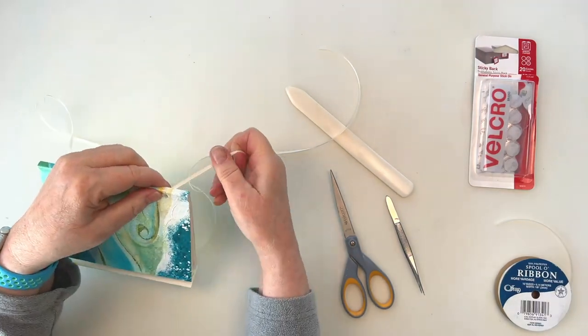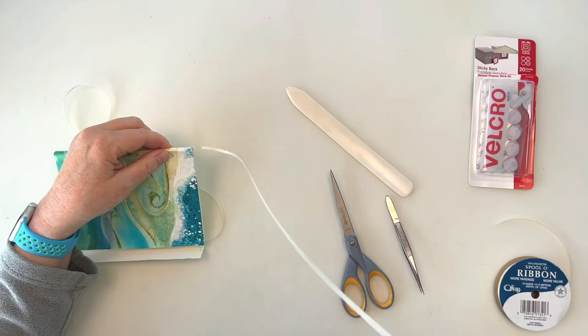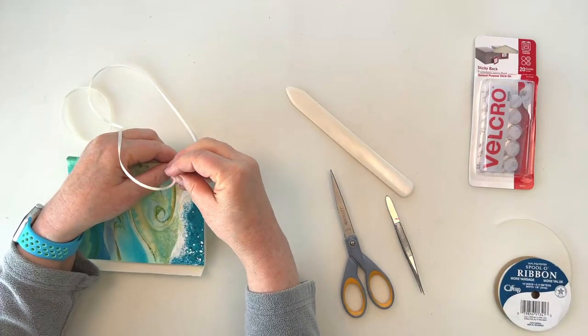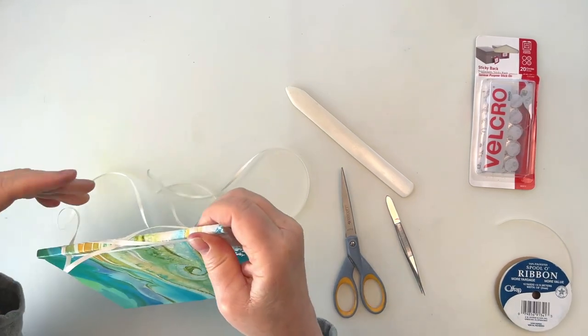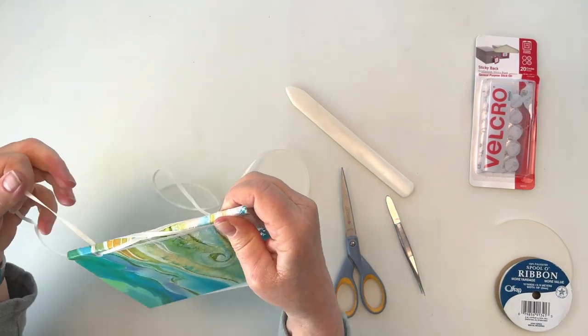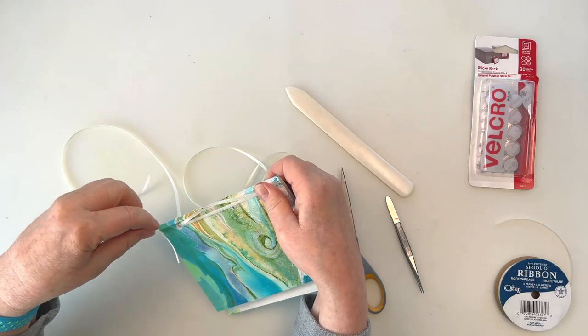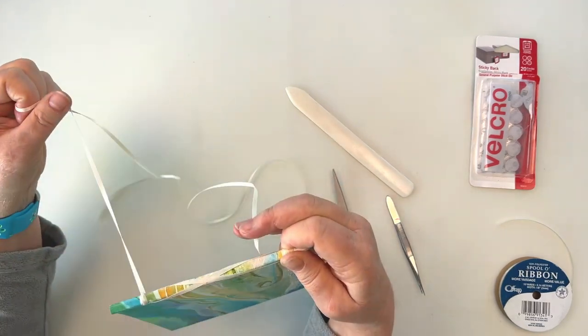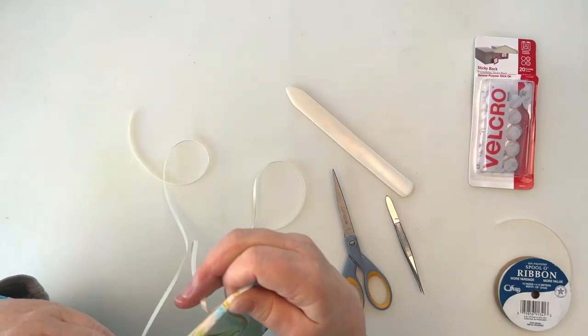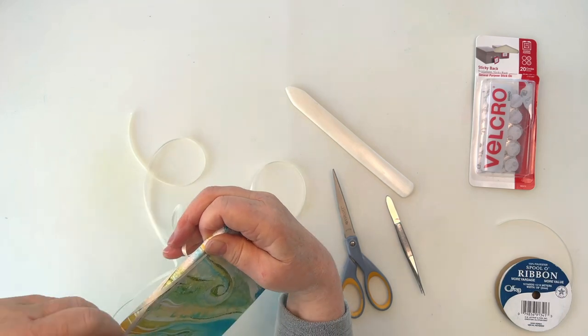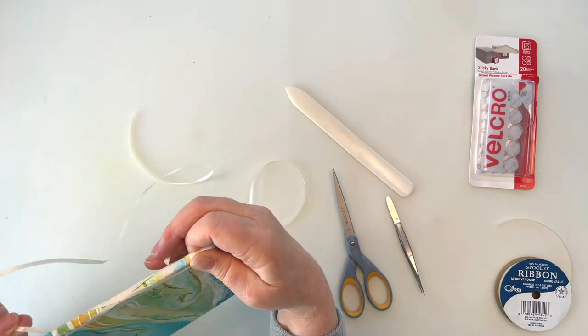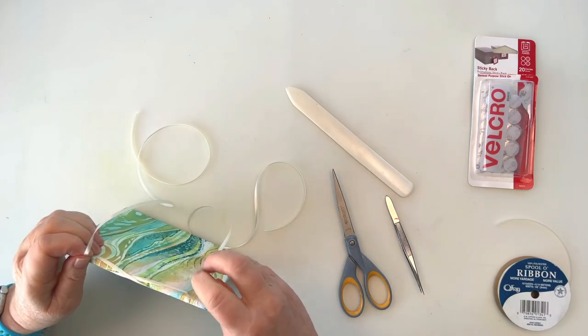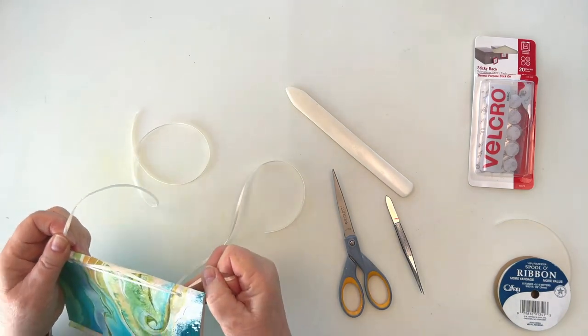And now I'm going to loop each tail once again around the spine and back through the same hole. Same thing on both ends as before. And if my ribbon gets twisted I try to flatten it out so that it lays nice and smooth. And I'm trying to keep a bit of tension on my lines so that everything is nice and snug.